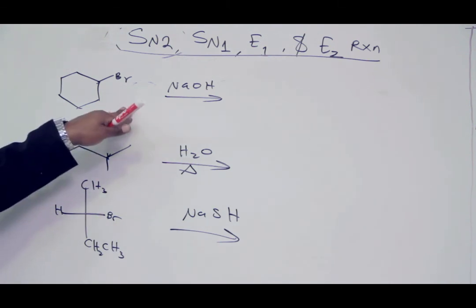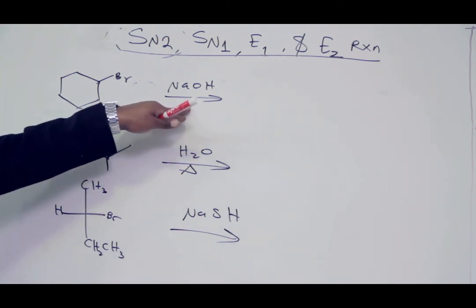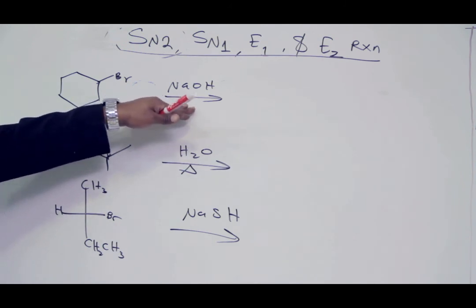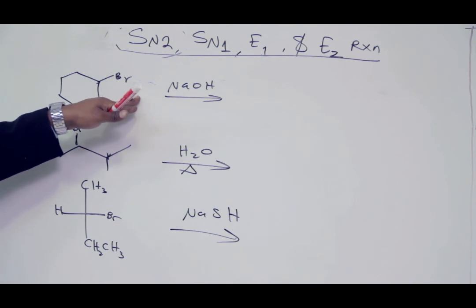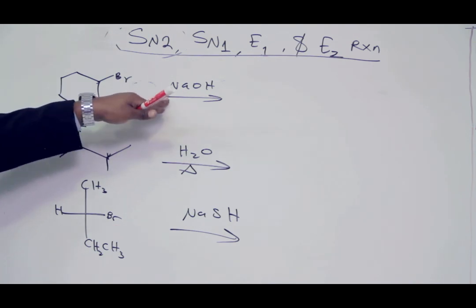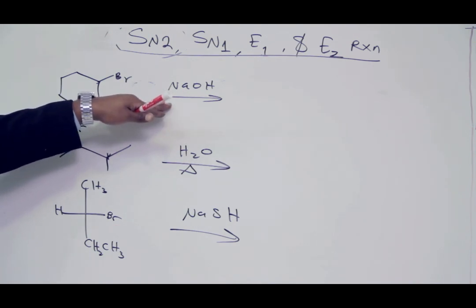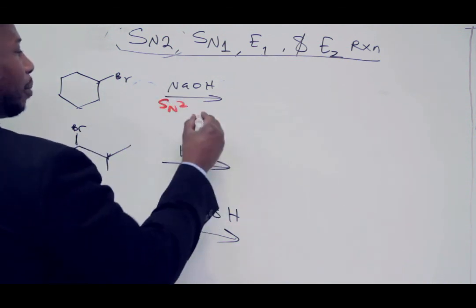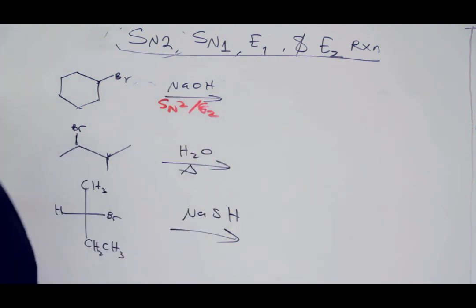The first one we see here — this is a strong base and it's a strong nucleophile. This is a secondary alkyl halide. Two things can happen here: E2 and SN2 reaction. So we write it down: SN2 can happen and E2 can happen.